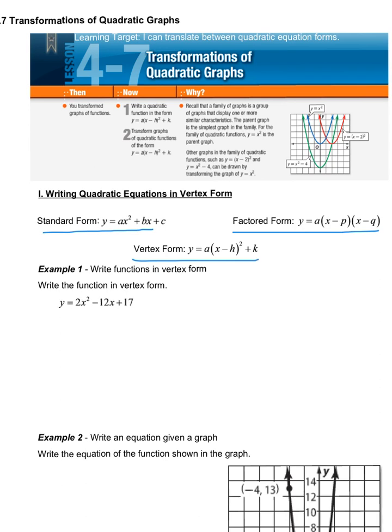Obviously the nice thing about vertex form is our vertex is very readily available and it's always the coordinates (h, k). If we can ever get it in this form it's going to make our lives graphing a lot easier because we already know the vertex is (h, k) and we know our axis of symmetry is x equals h. Today we're going to look at problems going from standard form to vertex form.